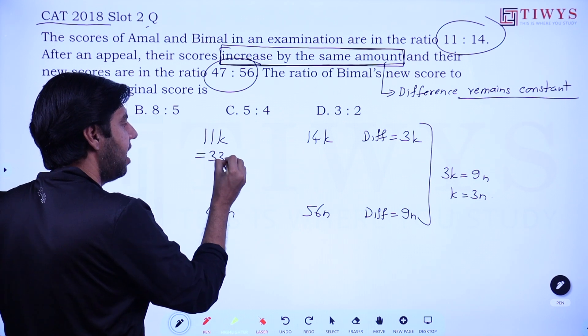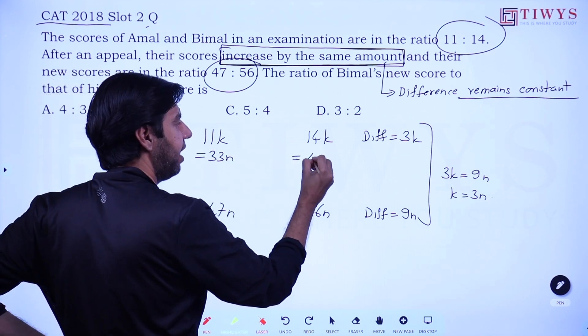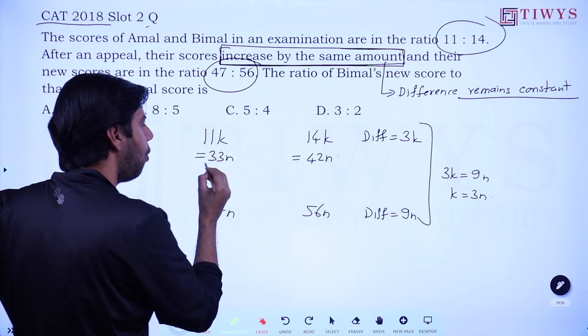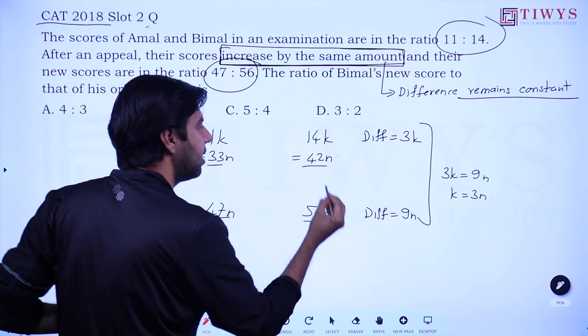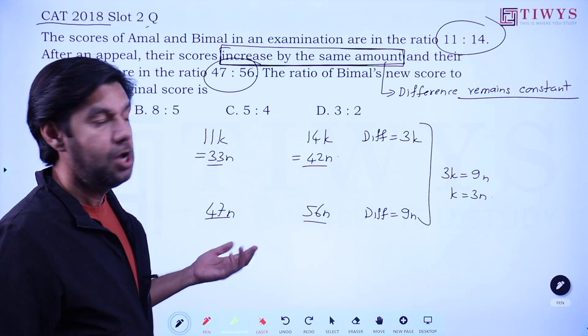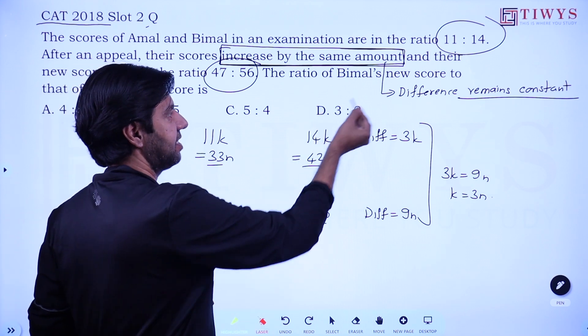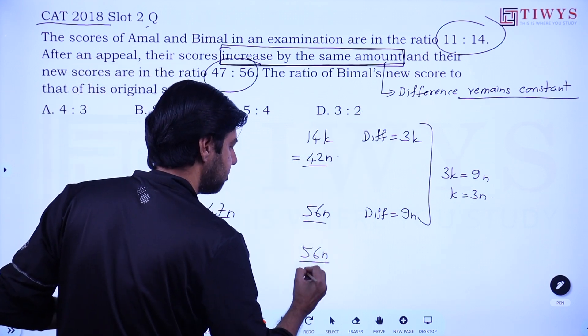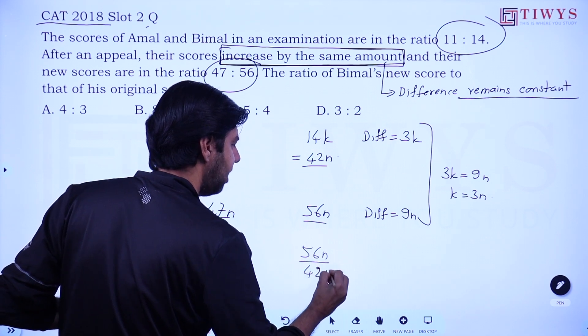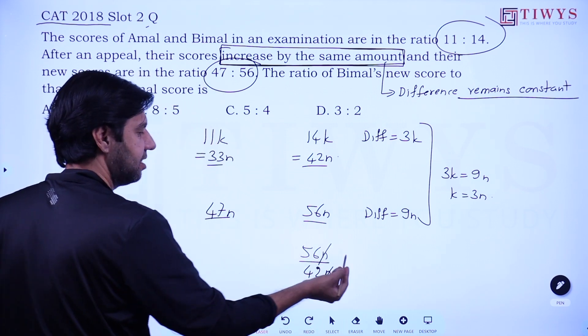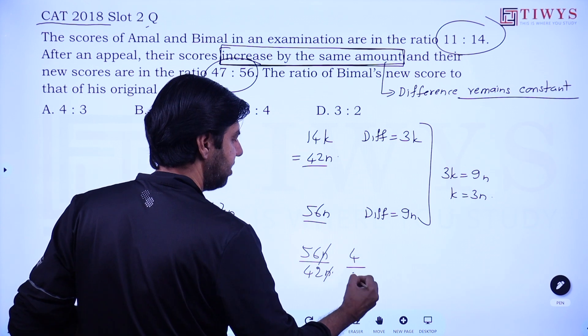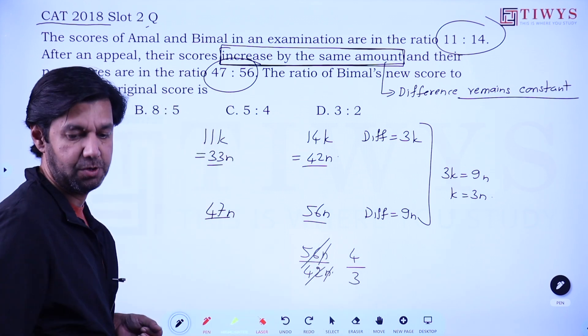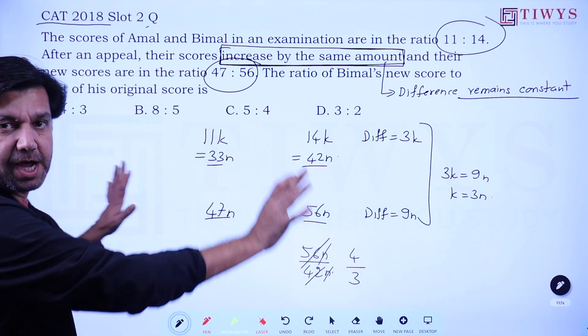This becomes 33n, and this becomes 42n. And now I have all four scores in terms of the same variable n. So the question is asking Bimal, the second guy's new score to his original score. So the n and n cancel out, and easily you will get an answer: that's your answer, 4:3. Easy, no calculations, nothing.